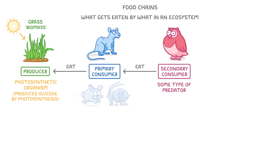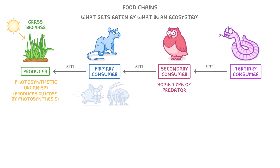If you're noticing a pattern here: primary means first, so they're the first consumers; secondary are the second; and another word for third is tertiary, so next we have the tertiary consumer. Some ecosystems would then have even more levels after this, while others might not even have this many.